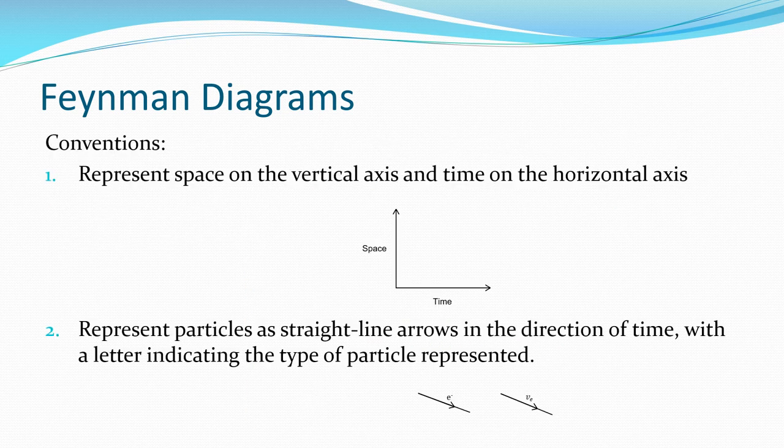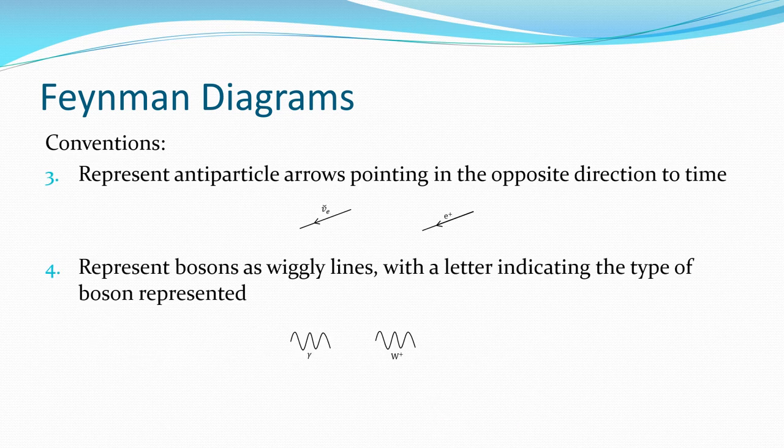So conventions. Generally, space goes on the vertical, the y-axis, time goes on the horizontal or the x-axis. Number two, we represent the particles as straight line arrows in the direction of time. And we usually put a letter on there to tell us what particle they are. So we've got an electron there and an electron neutrino there traveling forward through time. But that arrow moving from left to right is showing that.